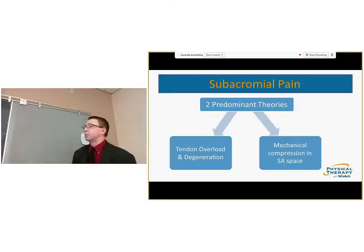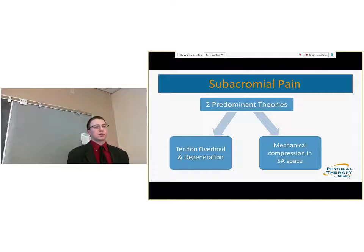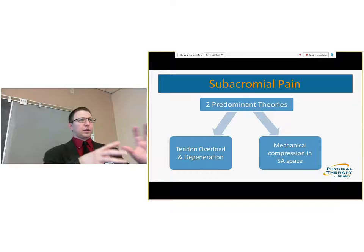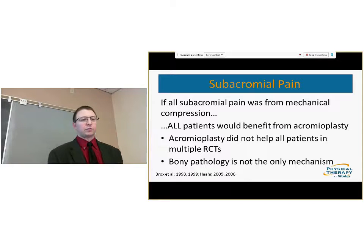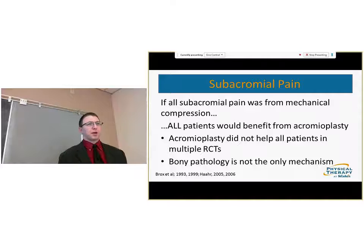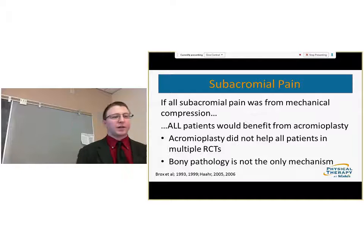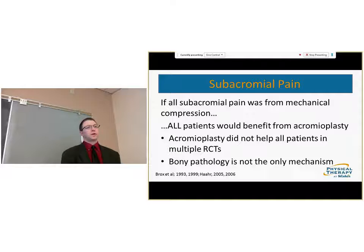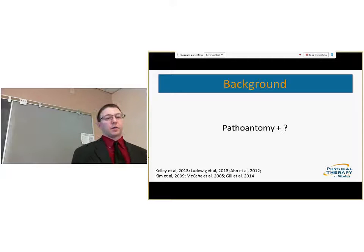There are two predominant theories about subacromial pain: tendon overload and degeneration, and mechanical compression in the subacromial space. Originally, the whole idea from Hawkins and Neer was mechanical compression — you take off the roof, give it more space, it gets better. But numerous studies from 1993, 1999, 2005, and 2006 show that acromioplasty does not help all patients. So bony pathology is not the only mechanism; pathology is important, but it's not the only thing — something's missing.